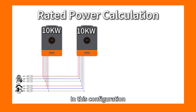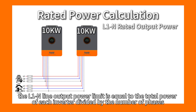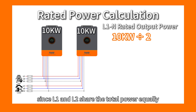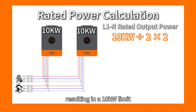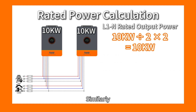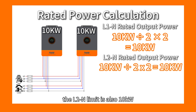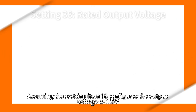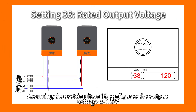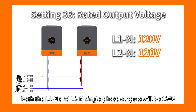In this configuration, the L1 output power limit equals the total power of each inverter divided by the number of phases. Since L1 and L2 share the total power equally, multiplied by the number of parallel inverters, the result is a 10kW limit. Similarly, the L2 limit is also 10kW, and the L1-L2 output power limit is 20kW. Assuming setting item 38 configures the output voltage to 120V, both the L1-N and L2-N single-phase outputs will be 120V.